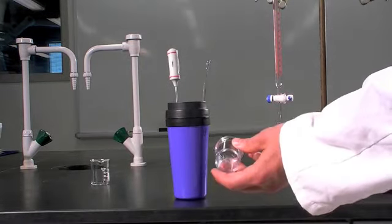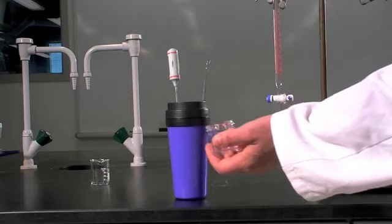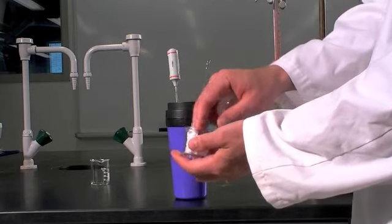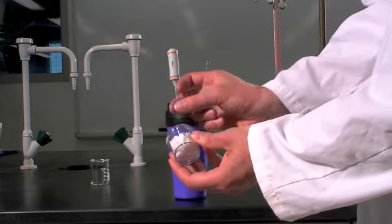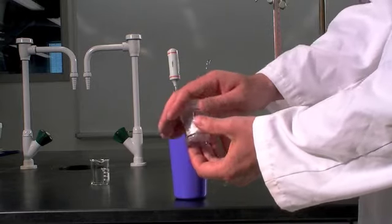For the calorimeter experiment you're going to need a weighing bottle. Place some paper towel into the bottom of the weighing bottle, put your ice on top of that, seal it up and weigh.